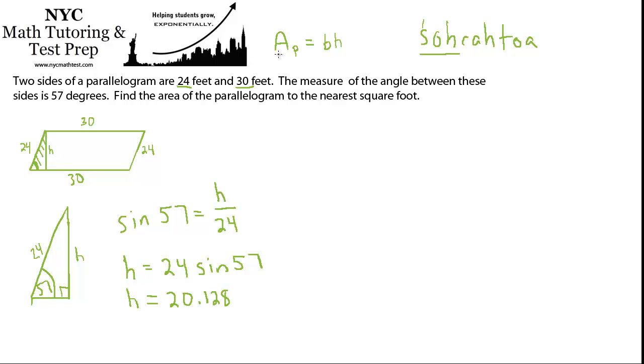Okay, so we have H. So we're ready to find the area of a parallelogram. Area is base times height. We have the height. We know the base is 30, so we're almost done. Let's just finish off. Area of a parallelogram equals 30 times 20.128. And if you multiply that out and round it to the nearest whole number, you will get 604 feet squared. And that's your answer.